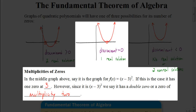Going back to that middle graph, let's say the equation was f(x) = (x - 3)². We could find the zero by setting that equal to zero, getting x = 3. When we square something, that means there are two of them — x minus 3 times x minus 3. We don't list 3 twice, so we describe it as a double zero, or a zero of multiplicity 2.